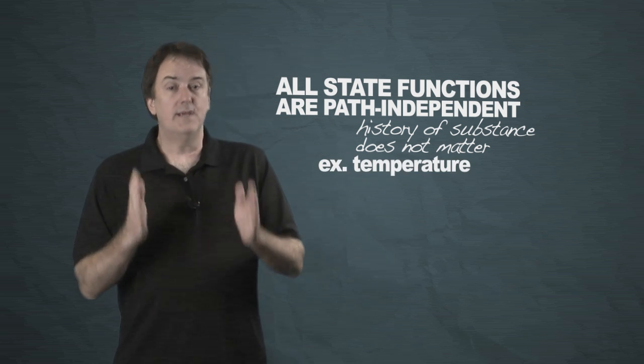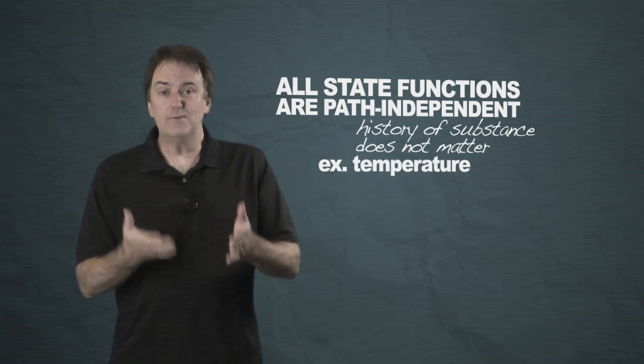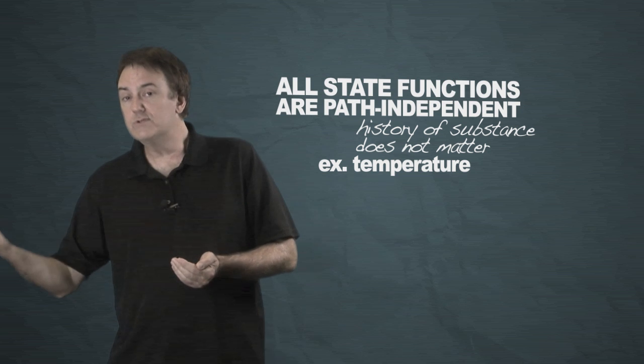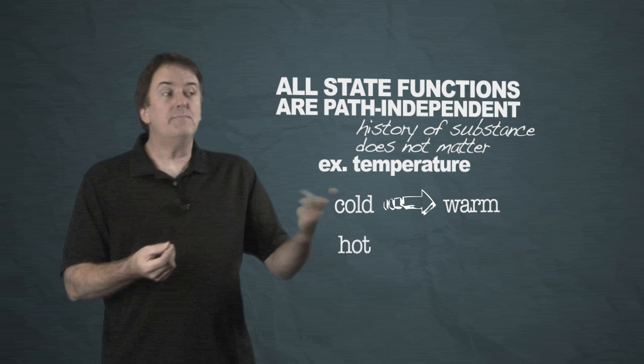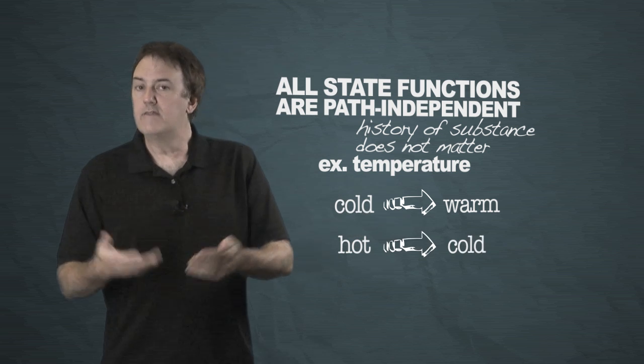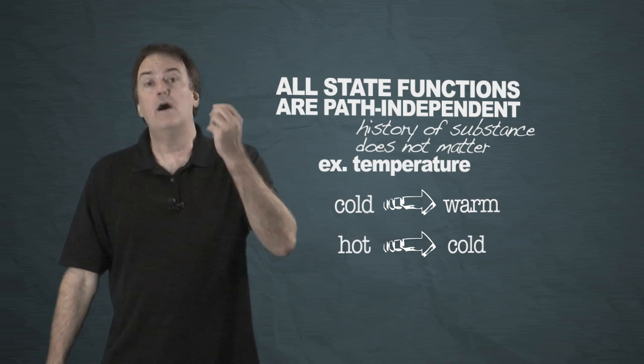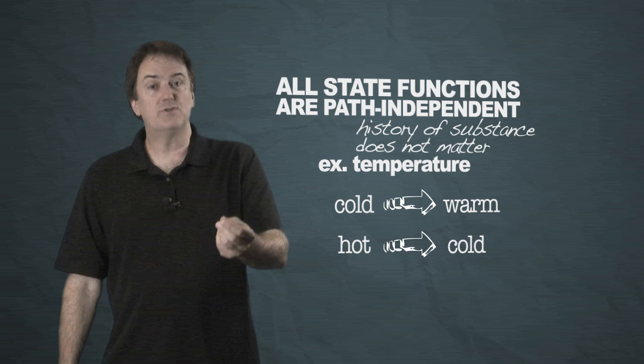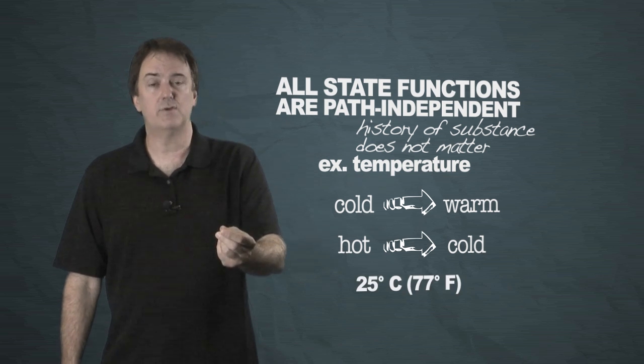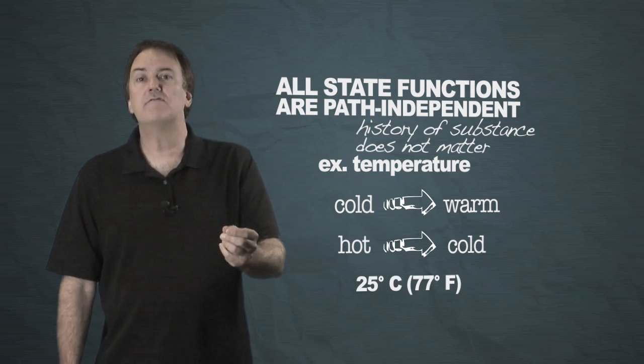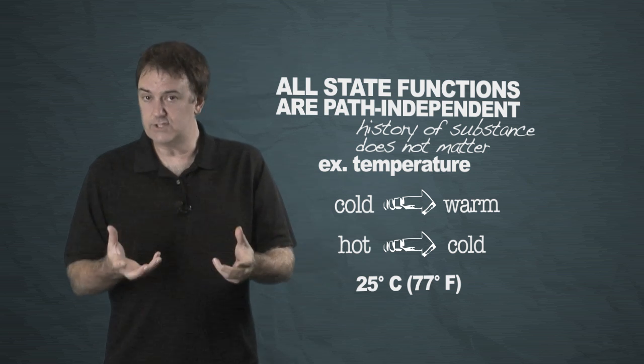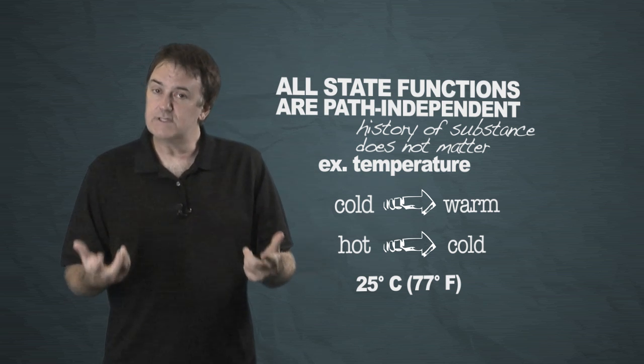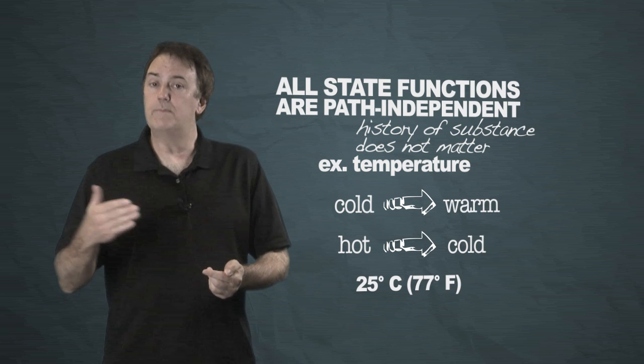Temperature. The temperature of something absolutely does not matter what it used to be. It doesn't matter if it used to be cold and now it's warm or it used to be hot and now it's cold. The facts are when you talk about the temperature being 25 degrees C or 77 Fahrenheit, we know exactly what you're talking about. We know what that function is. And that's the importance of a state function. It is not path dependent.